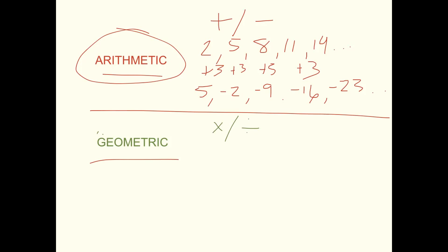So for instance you could multiply times 3 each time. So 3 times 3 is 9, times 3 is 27, times 3 is 81 — times 3 is 243, etc. and so forth.